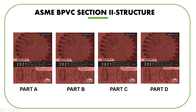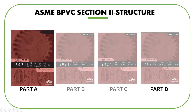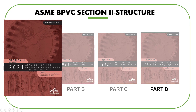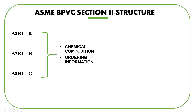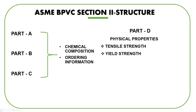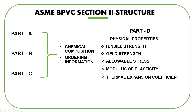In the pressure vessel industry, we deal mainly with ferrous materials, so we mainly need to refer to Part A. Parts A, B, and C cover the specifications of materials like their chemical composition and ordering information. Part D covers their physical properties, like tensile strength, yield strength, allowable stress, modulus of elasticity, and thermal expansion coefficient. Parts A, B, and C generally help in material selection and procurement, while Part D is most useful in the design process.